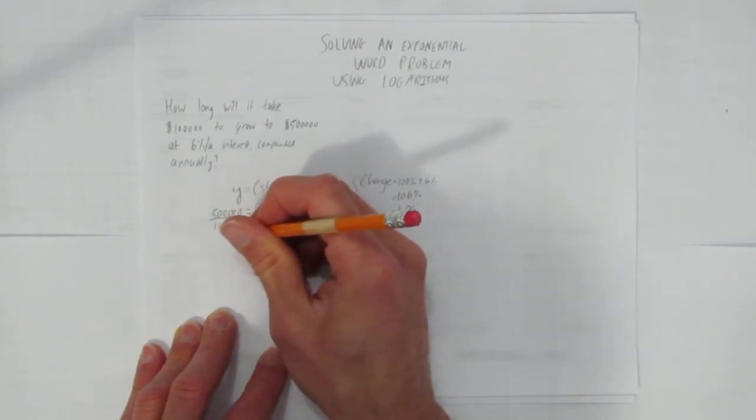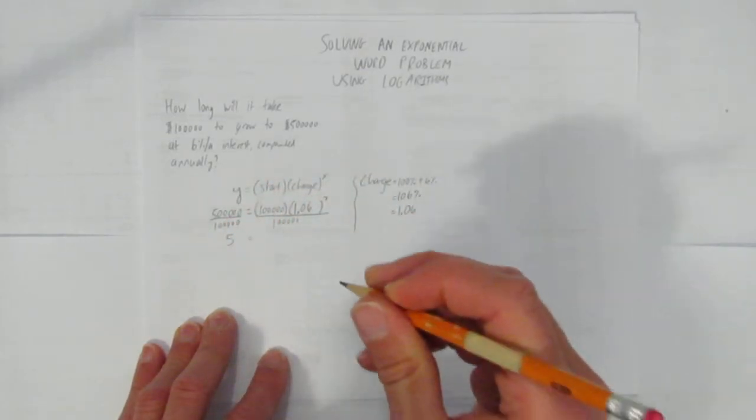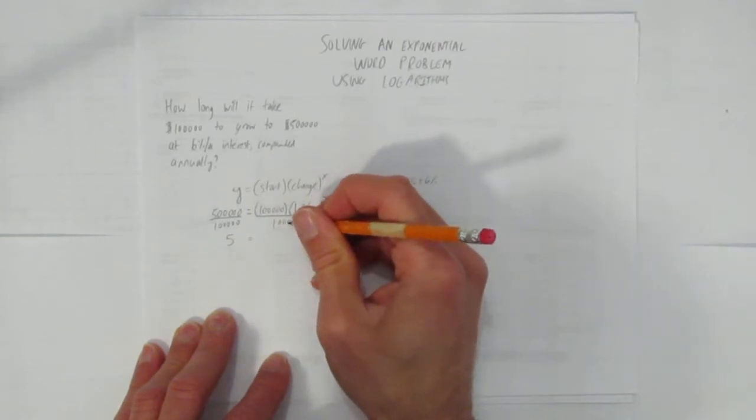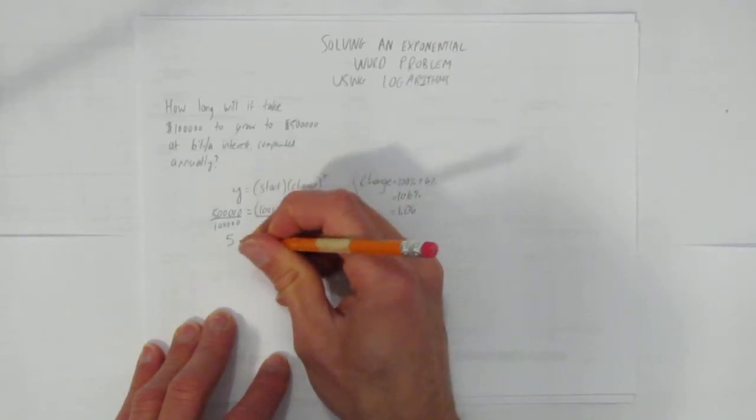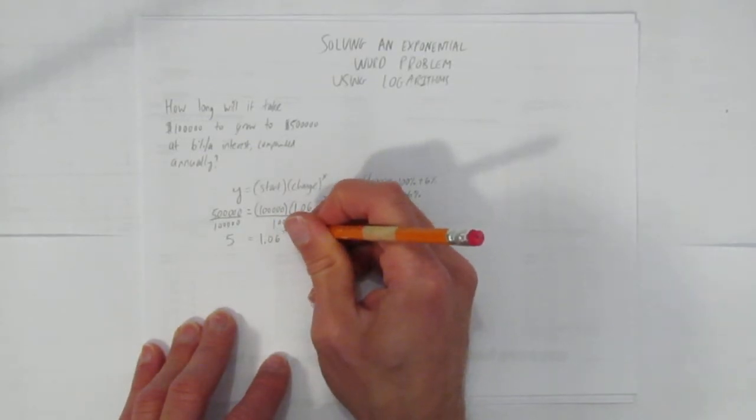So $500,000 divided by $100,000, that just leaves 5. And then $100,000 divided by $100,000, those cancel out. And I'm left with a nice simple equation, 5 equals 1.06 to the power of x.